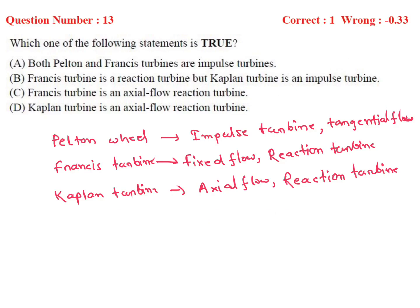The question asks: which of the following statements is true? We check each option. Pelton wheel is an impulse turbine and a tangential flow turbine. Francis turbine is a mixed flow reaction turbine. Kaplan turbine is an axial flow reaction turbine. So option A — both Pelton and Francis are impulse turbines — is wrong, since Francis is a reaction turbine.